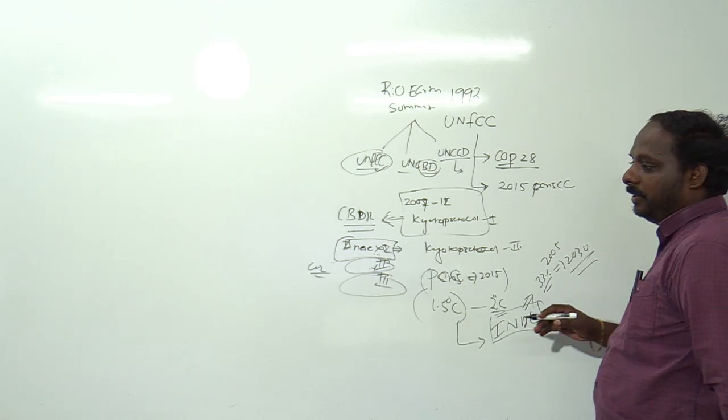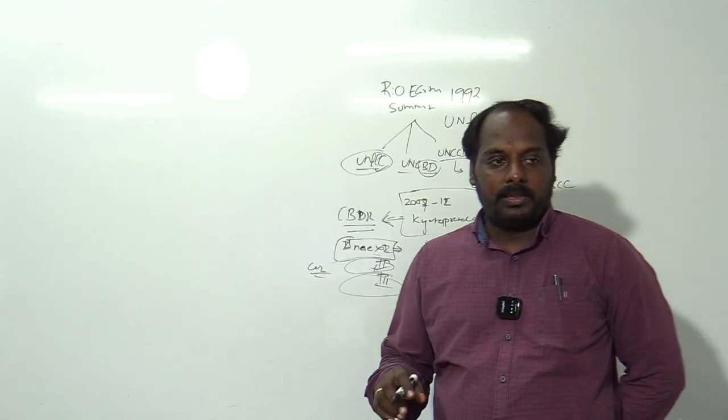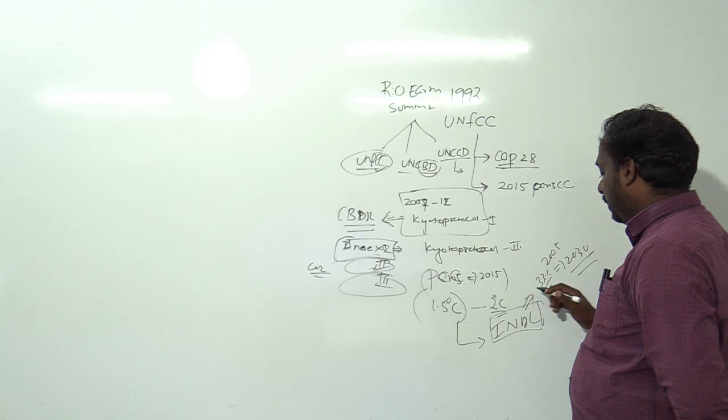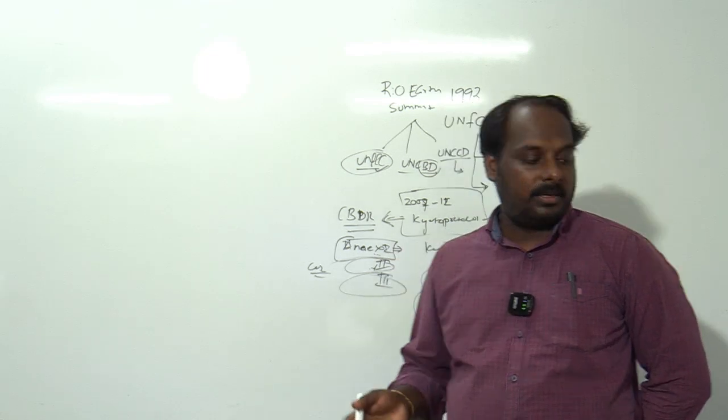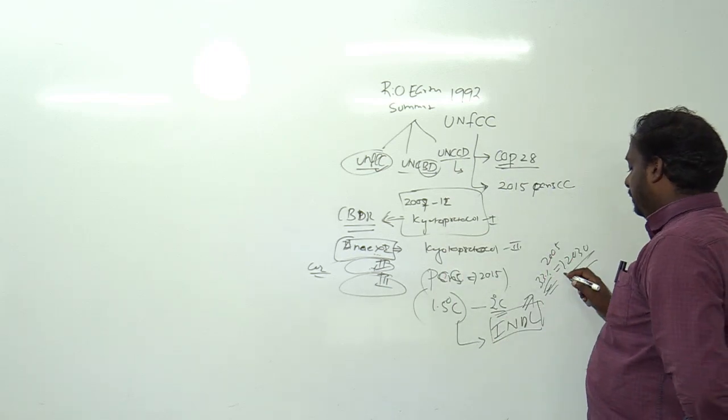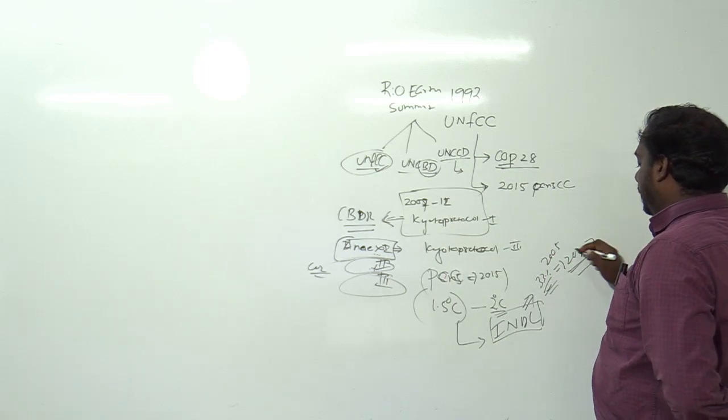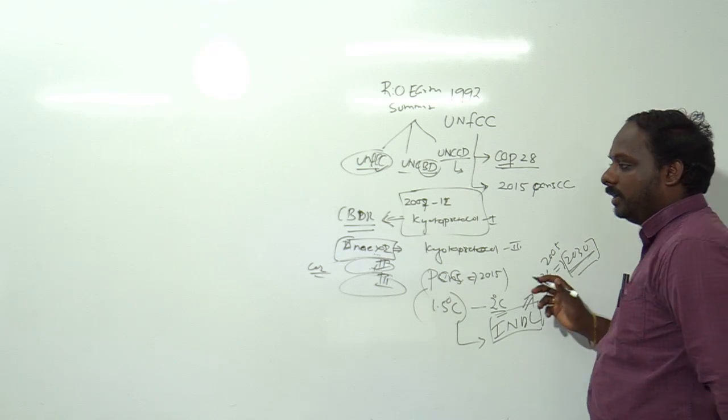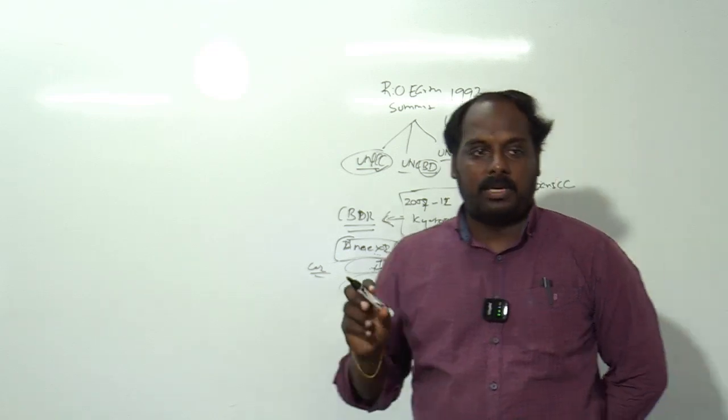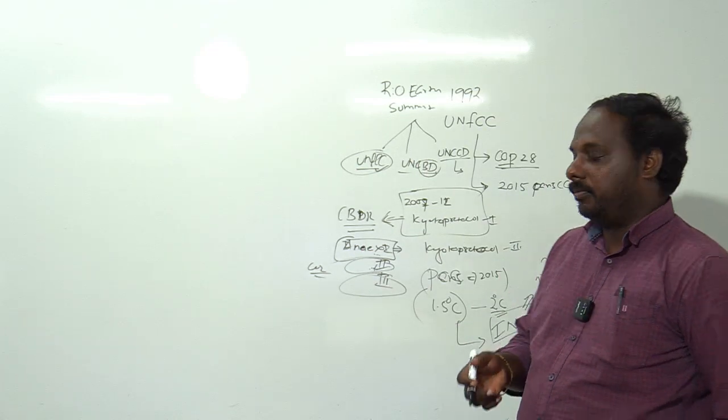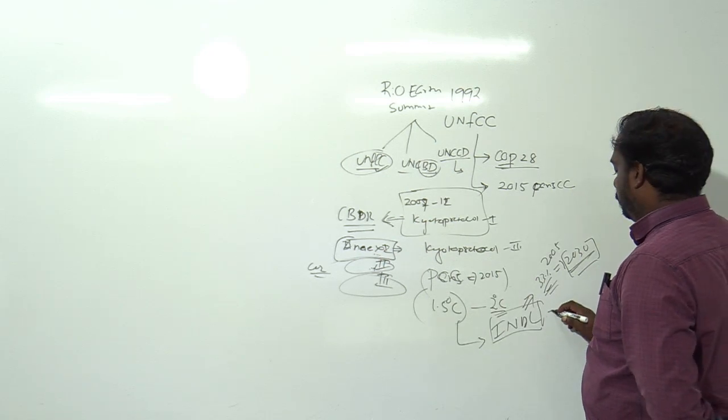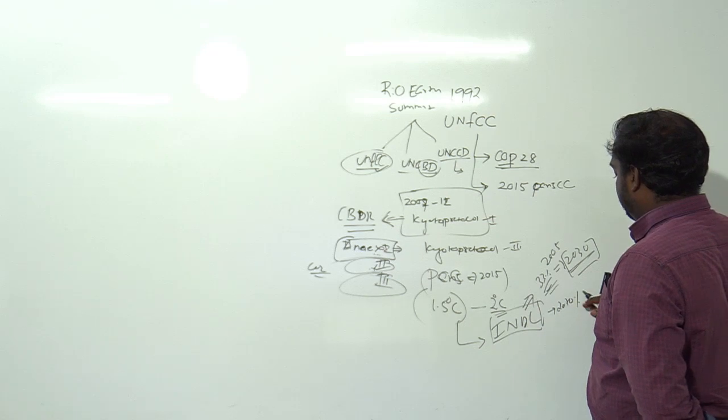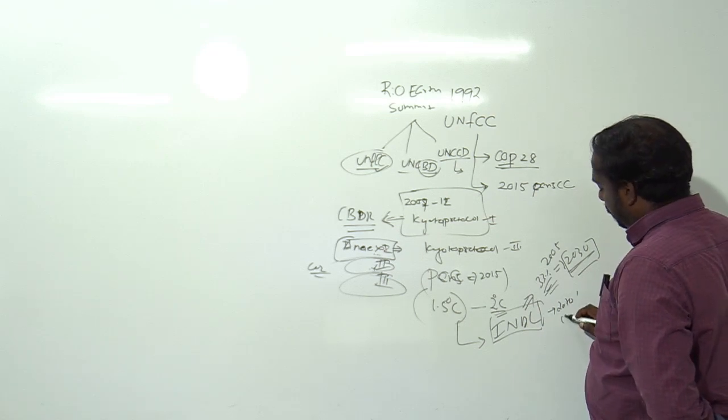Every 5 years there will be a stock take. Every country will review whether they are following their commitments, tracking carbon dioxide emissions during the pledge period. There will be a stock take every 5 years. They will review their commitments and renew their commitments. That's why in 2017 we pledged for carbon neutrality.